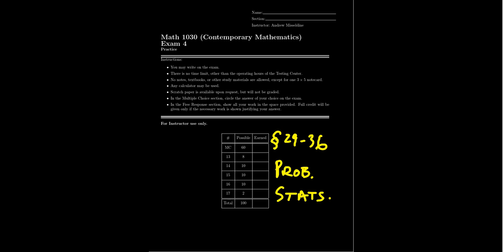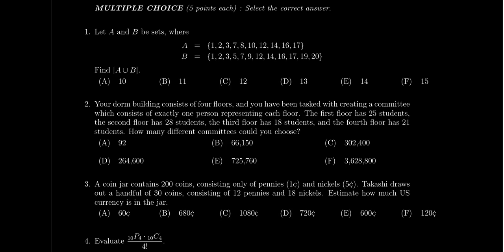This exam covers topics from lesson 29 all the way to lesson 36. The main topics are probability and statistics — some counting, some probabilities, and some experimental design. Let's talk about the specific types of things you should be seeing on this exam and what you should be studying as you prepare for exam four. We'll begin with the multiple choice section.